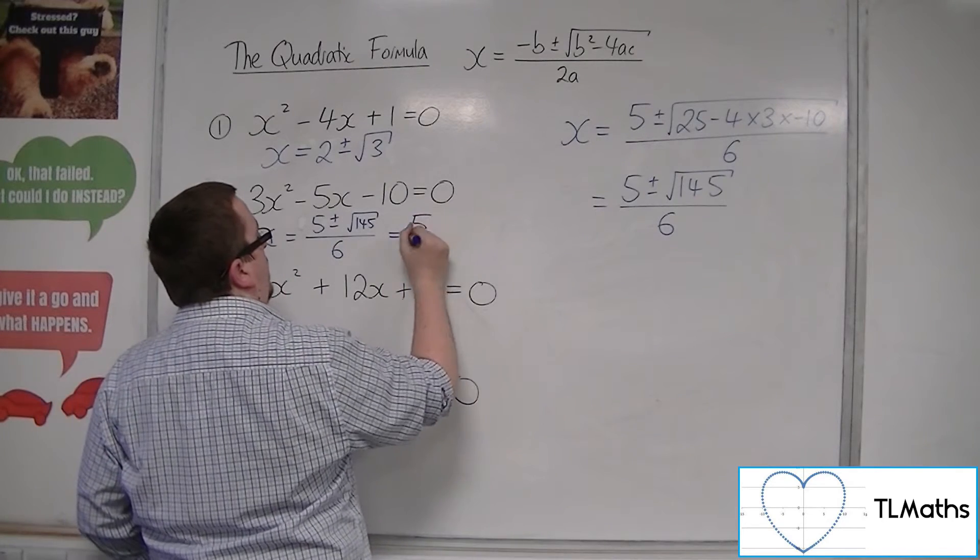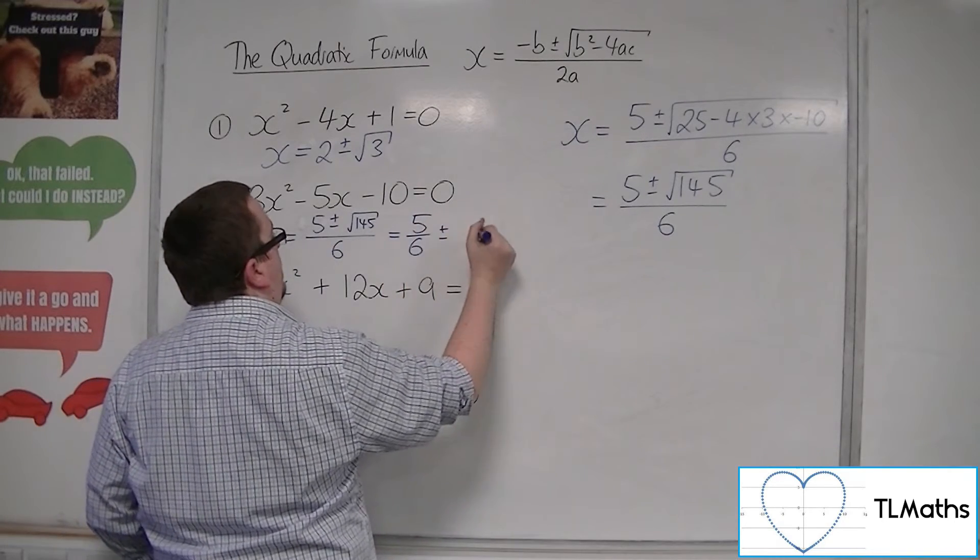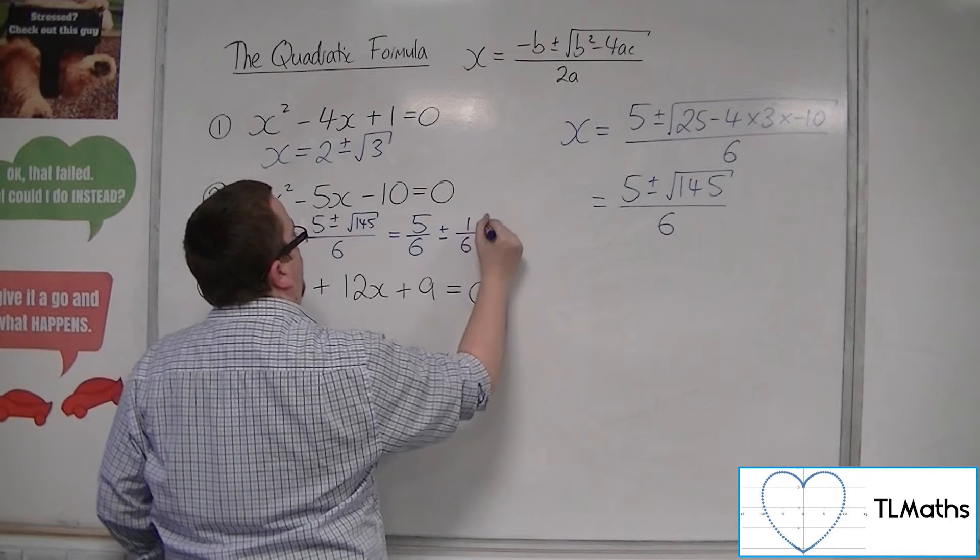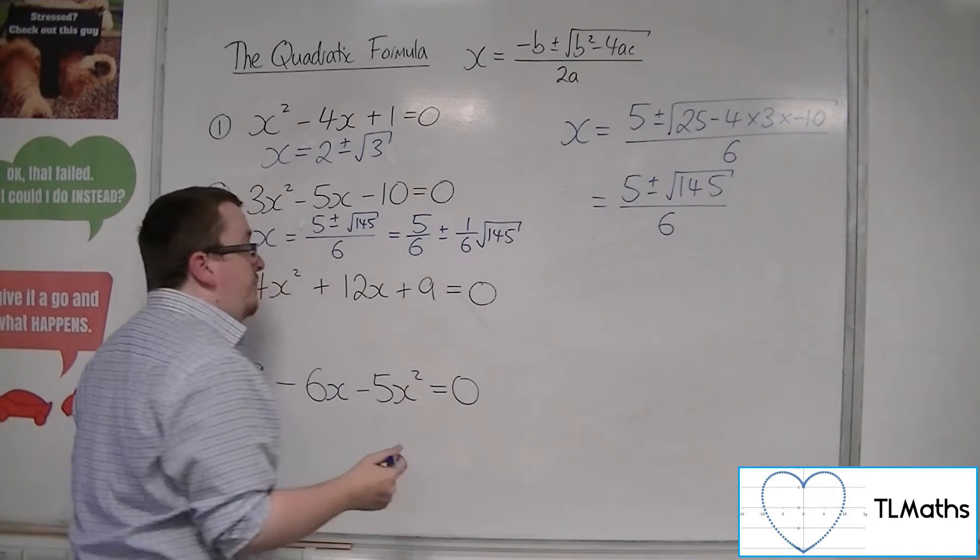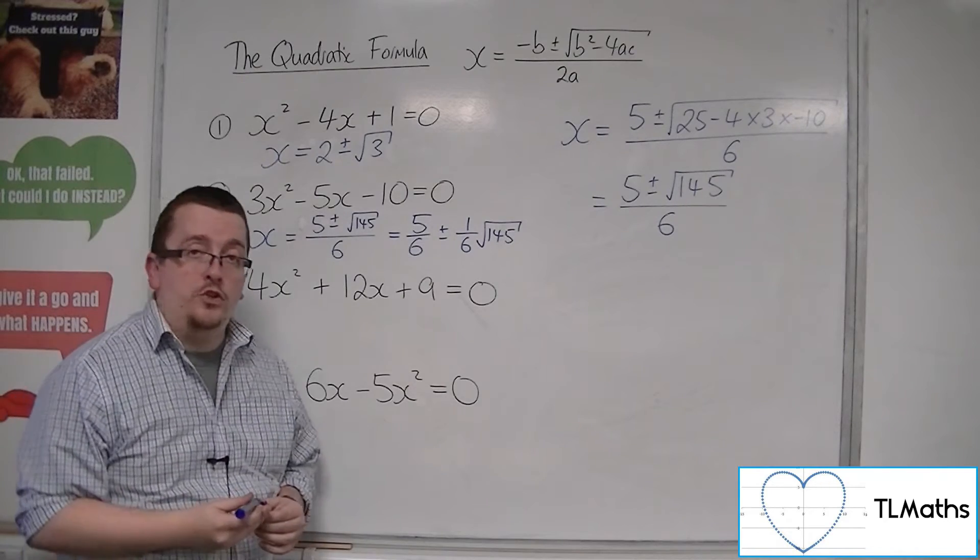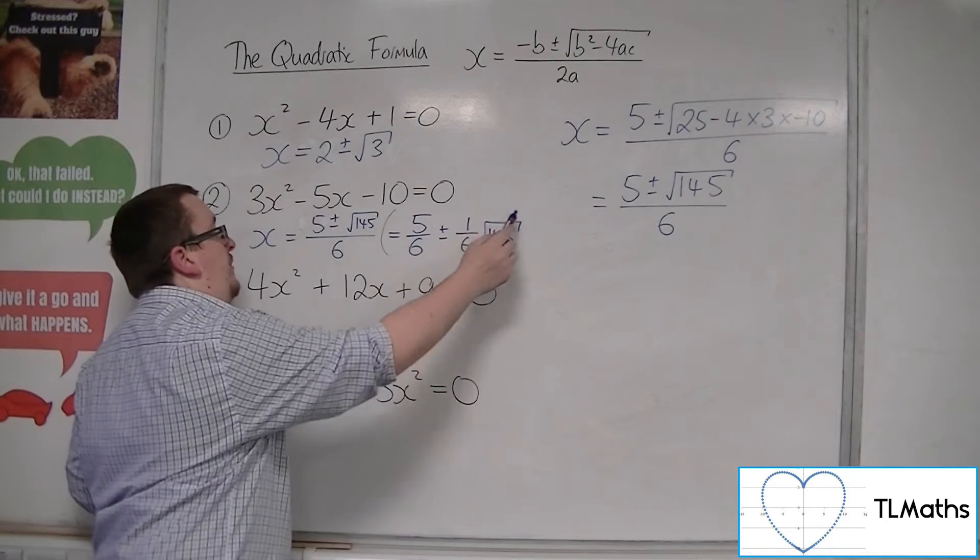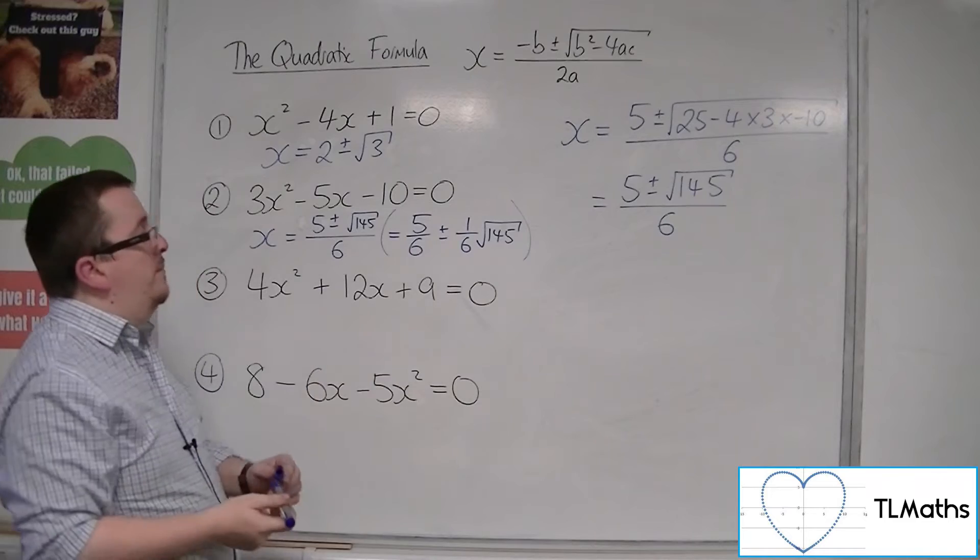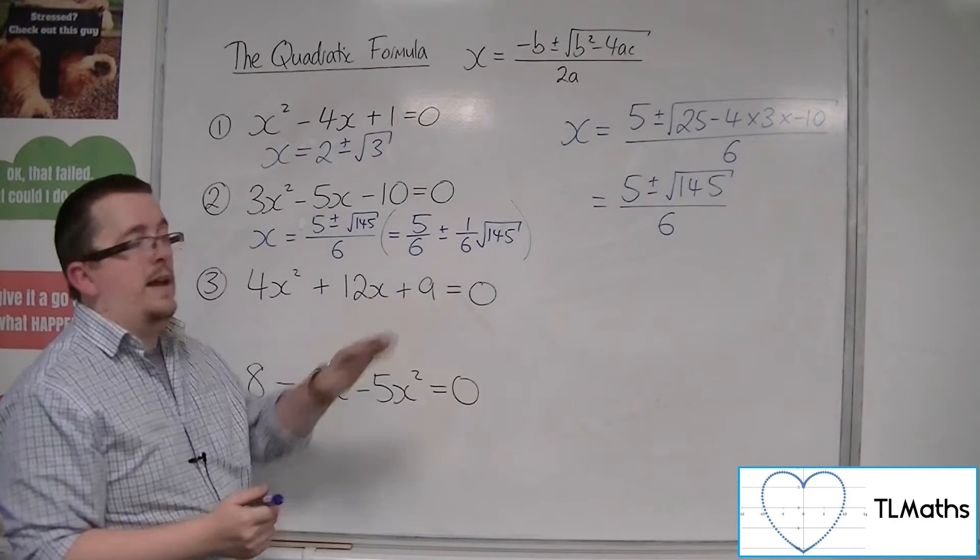And say that's 5 sixths plus or minus a sixth of the square root of 145. You can write it like that if you wish. It's not necessary to rewrite it like that, but if you prefer, you can.